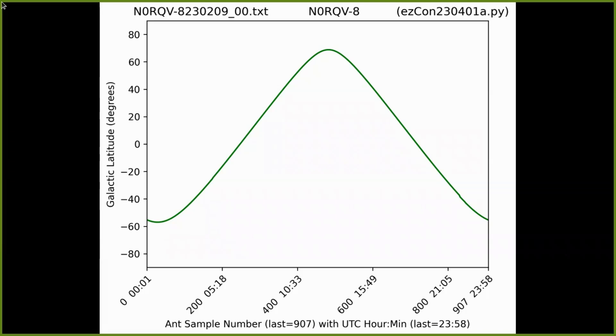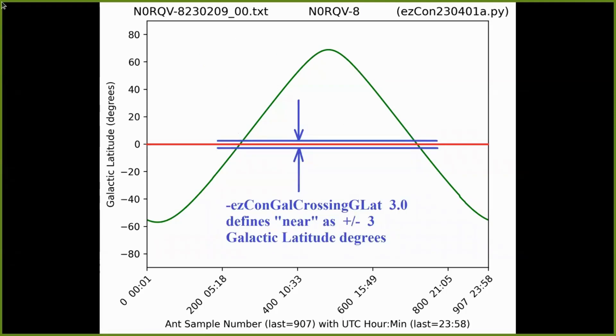We know that the galactic latitude varies even within one day. Sometimes we're looking above the galactic plane with a positive value and sometimes we're looking below the galactic plane, but some samples are actually near the galactic plane right there at zero. But define what near is. EZCON allows you to define that with a big long keyword, EZCON gal crossing galactic latitude of 3.0 would define near as plus or minus three galactic latitude degrees up and down.